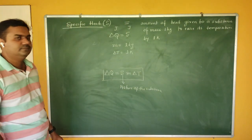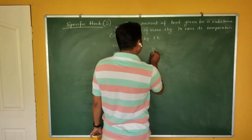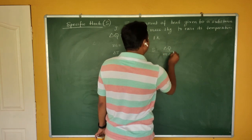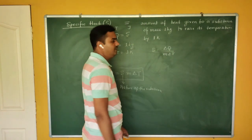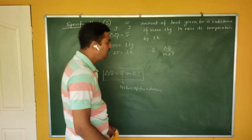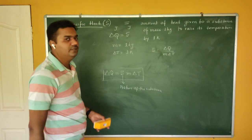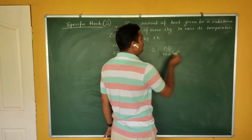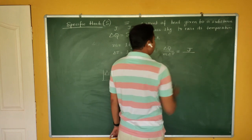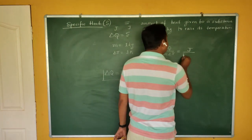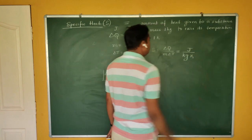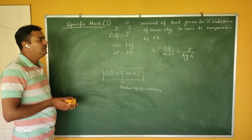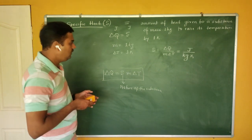From the formula, S = delta Q / (m × delta T). The SI unit of specific heat is Joules per kilogram per Kelvin (J/kg·K), since the unit of heat energy is Joule, mass is kg, and temperature is Kelvin.